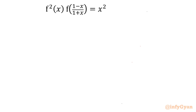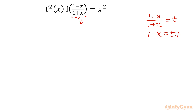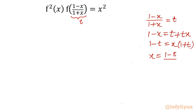I will substitute (1 minus x)/(1 plus x) equal to t. Let me write (1 minus x)/(1 plus x). Cross multiply and find x as a function of t. I will take x towards the right and t towards the left. So, 1 minus t will become x times (1 plus t). Ultimately, x comes out as (1 minus t)/(1 plus t) — the same function.